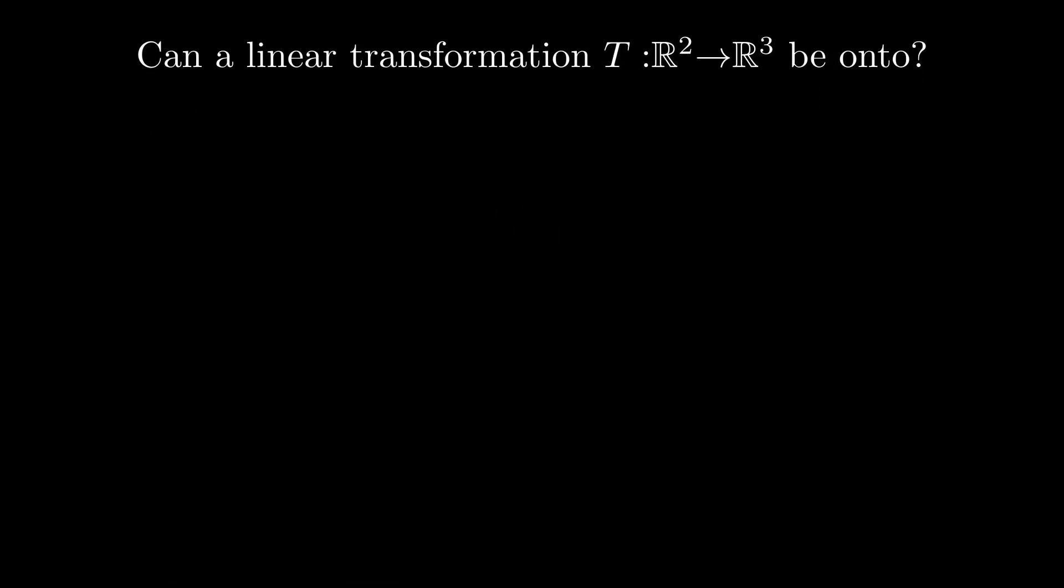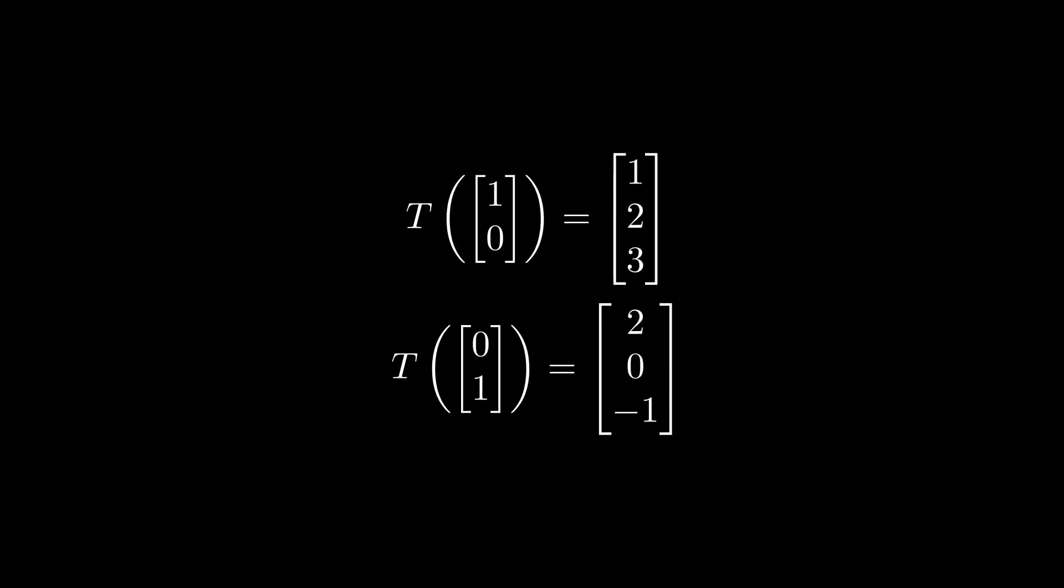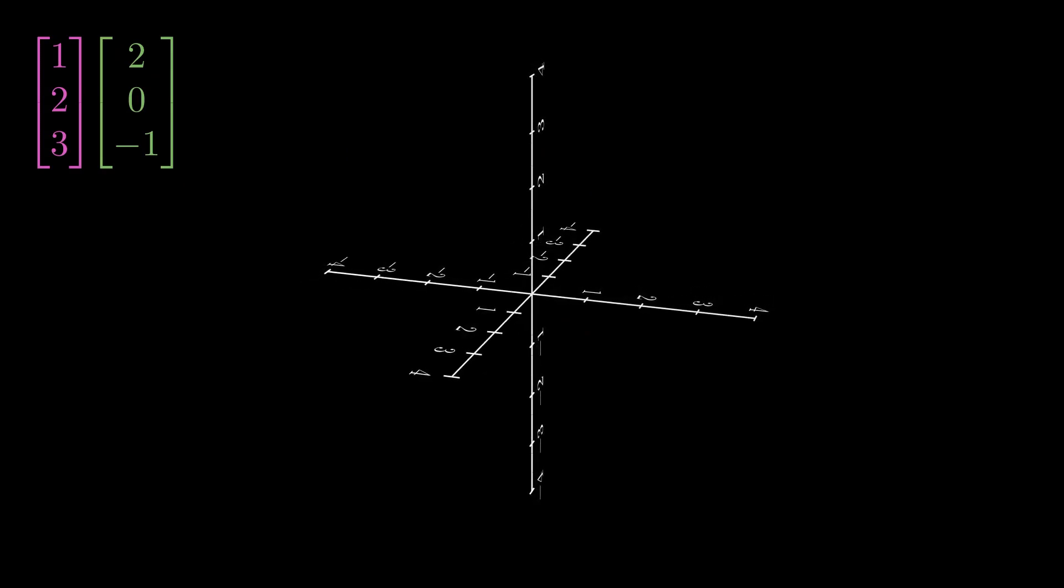It's because this linear transformation is determined by where it sends two basis vectors. And to see what this means, let's look at the points in 3D space that we assign 0-1 and 1-0 and then draw arrows to them.